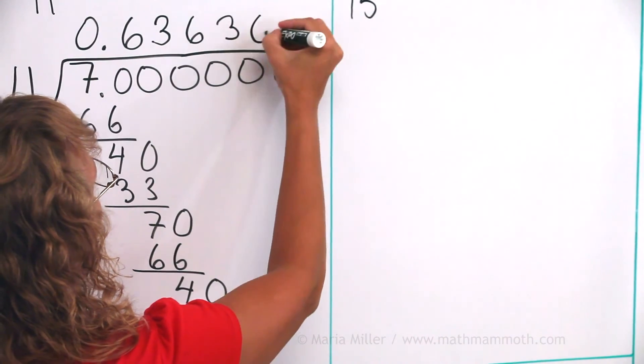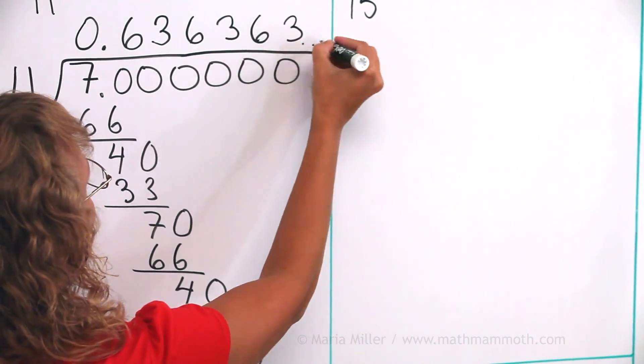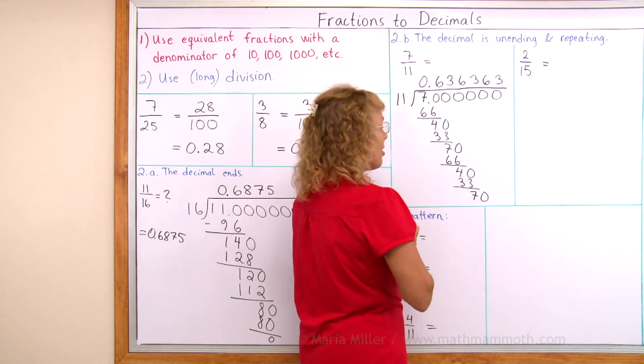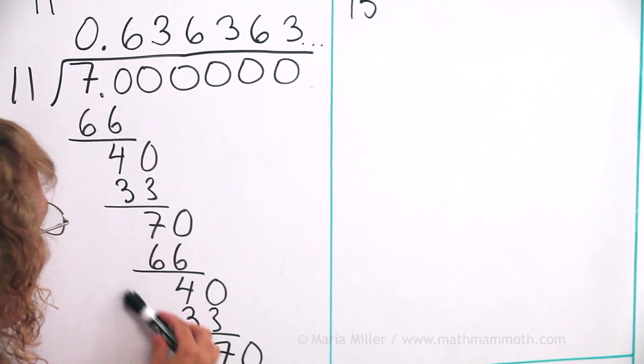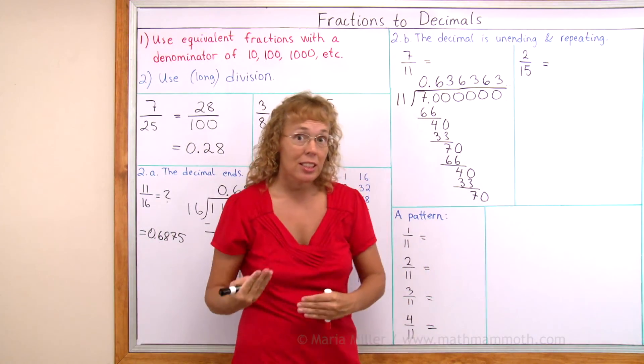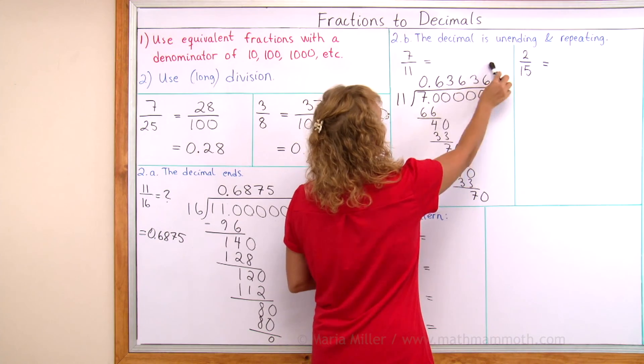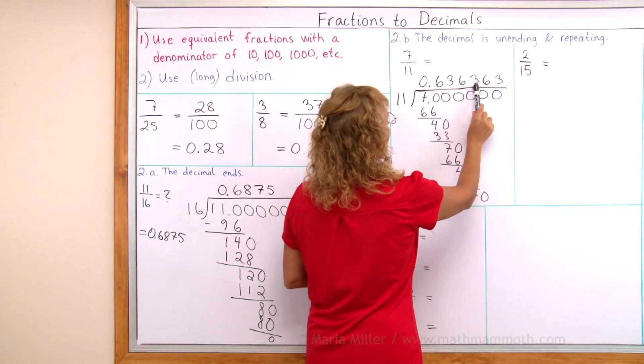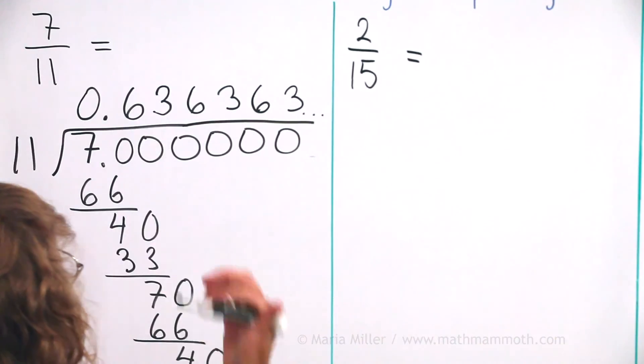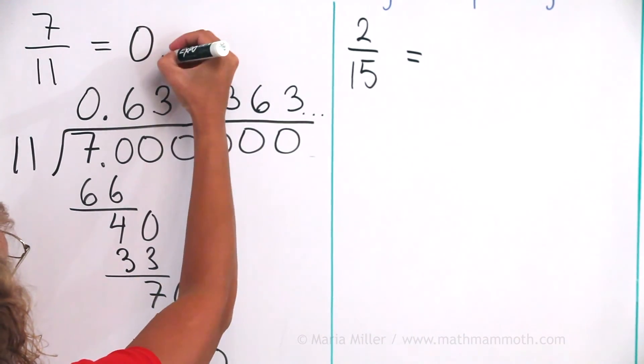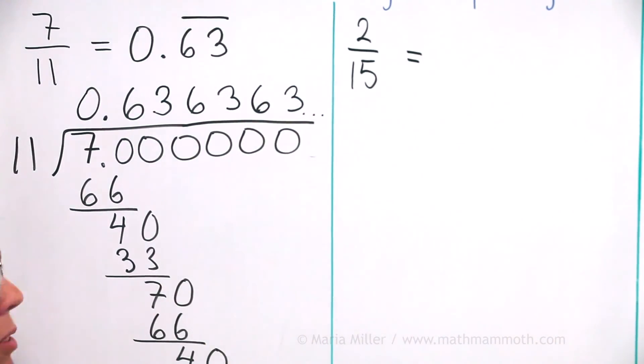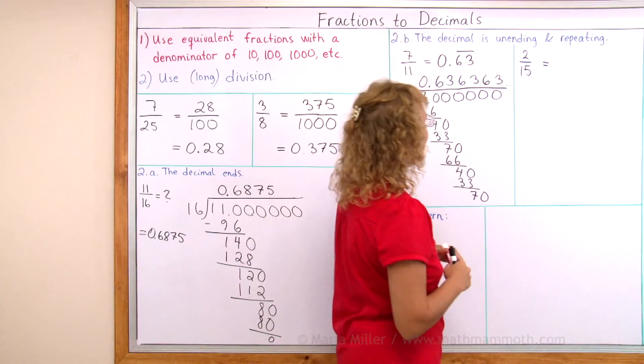Now I know it's going to go 6, 3, 6, 3. It's going to repeat the 6, 3, and it's never going to end. I can see that here too. Because it keeps repeating the same remainders, it's never going to give me a remainder of zero. The way to write this as a decimal is either this way, with three dots showing that it repeats, or like this: 0.63 and then draw a bar above those repeating digits.